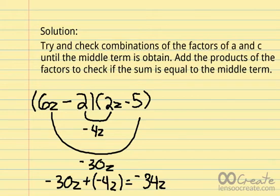For example, the product of 6z minus 2 and 2z minus 5. Their sum is negative 34z. Therefore, this is not the factor of the given.